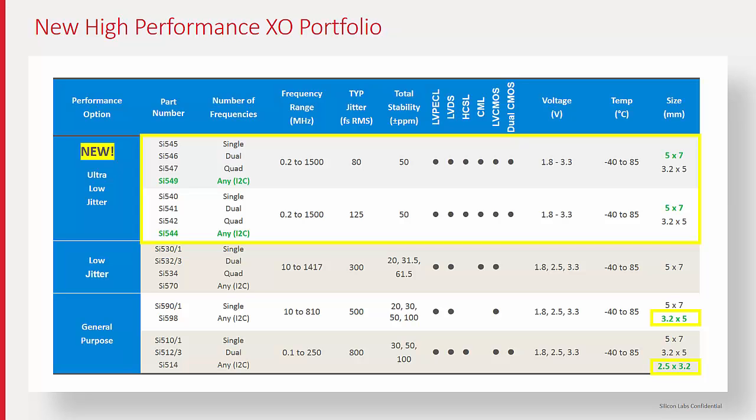Consumer applications in general continue to get smaller and smaller, so we've had a lot of interest for consumer parts for our new 2.5 by 3.2 devices. And in general, boards for servers and acceleration cards in the data center space — everyone is concerned about footprint and overall data center footprint, which continues to drive boards smaller and smaller. The new package sizes that we have will help in some specific markets, but even in general, it will help open up more opportunities for us.